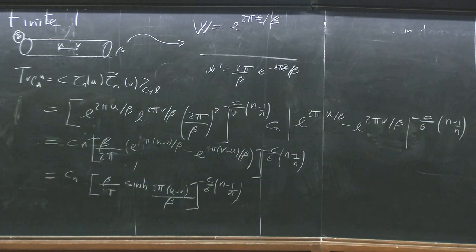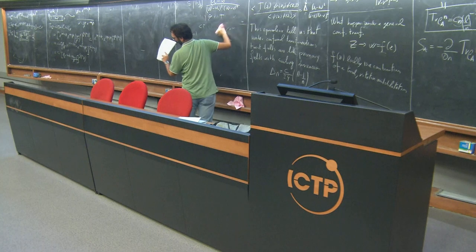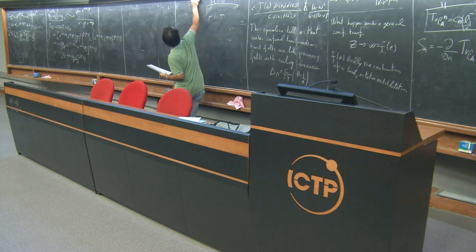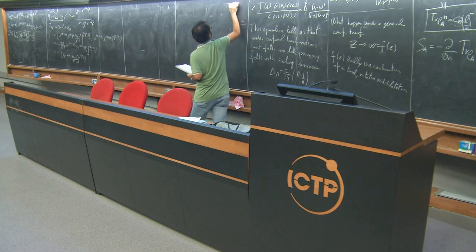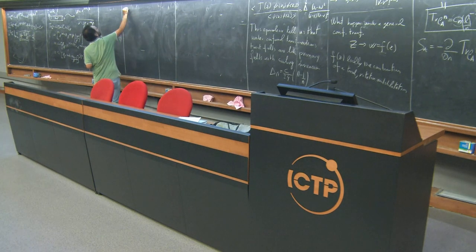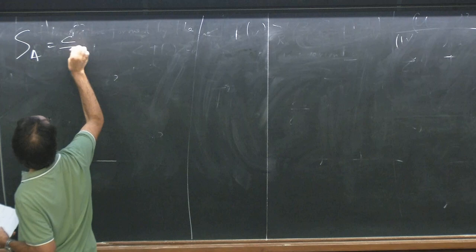Putting everything together, Tr(ρ_A^n) on the cylinder becomes c_n × (β/2π)^(c/6·(n−1/n)) times [e^(2πU/β) − e^(2πV/β)] to the power −c/6·(n−1/n). This is explicitly a function of U−V. That object in brackets is just the hyperbolic sine, so it simplifies to a function involving sinh(π(U−V)/β).